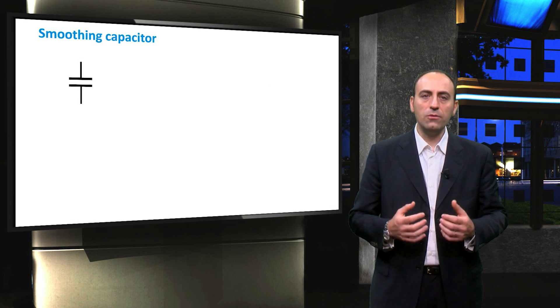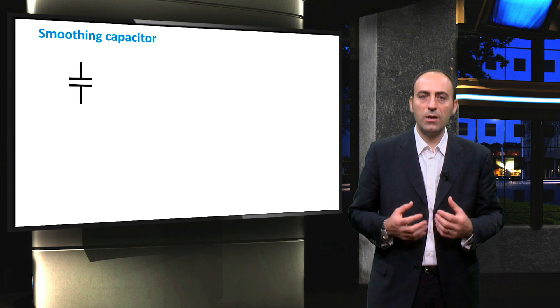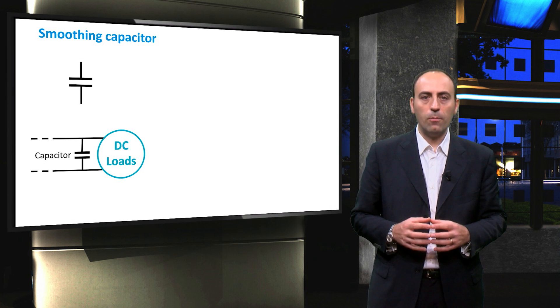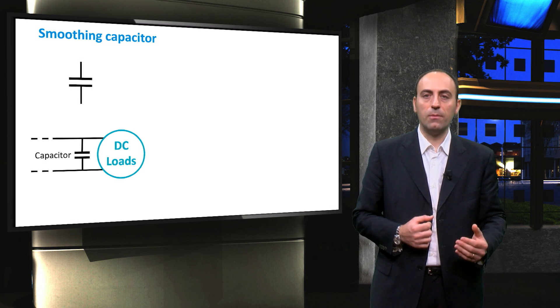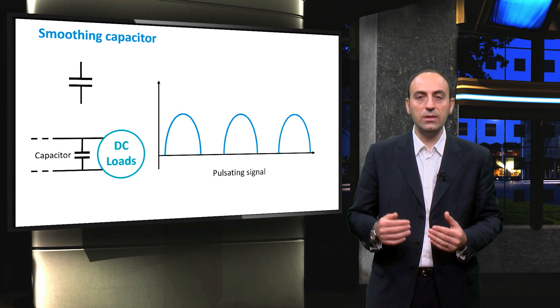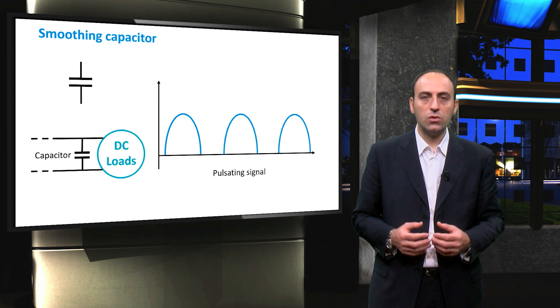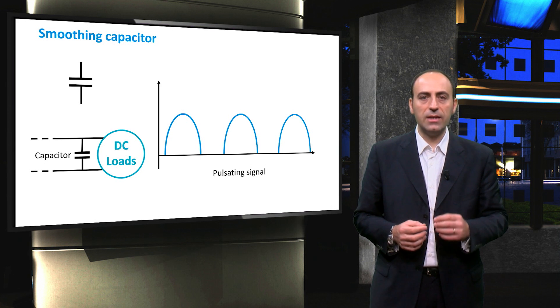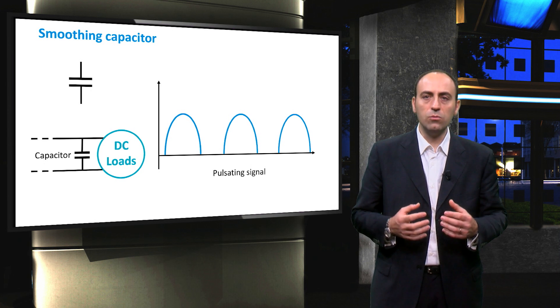And finally, another important component is the smoothing capacitor, which is placed in parallel with the load. From all these switches, the resulting signal is periodic in time, but actually, the output of a DC-DC converter has to also be a DC signal. So the solution is to place a smoothing capacitor, also called reservoir capacitor, to smooth the signal.